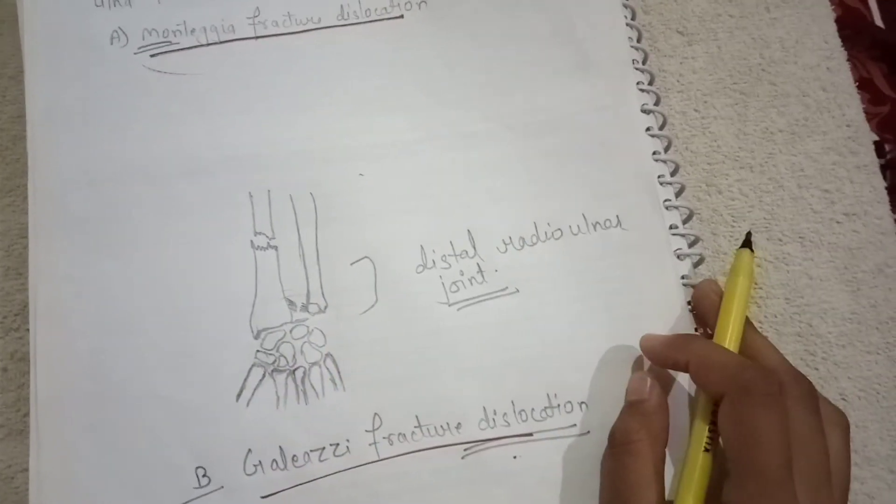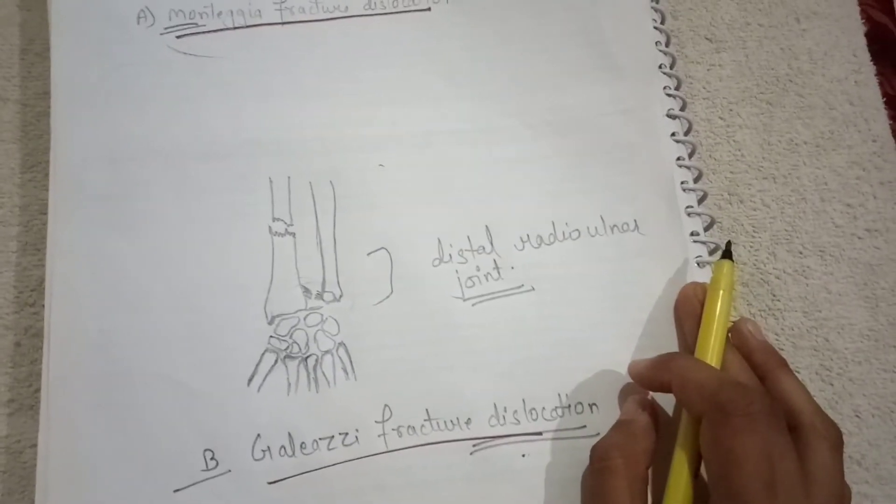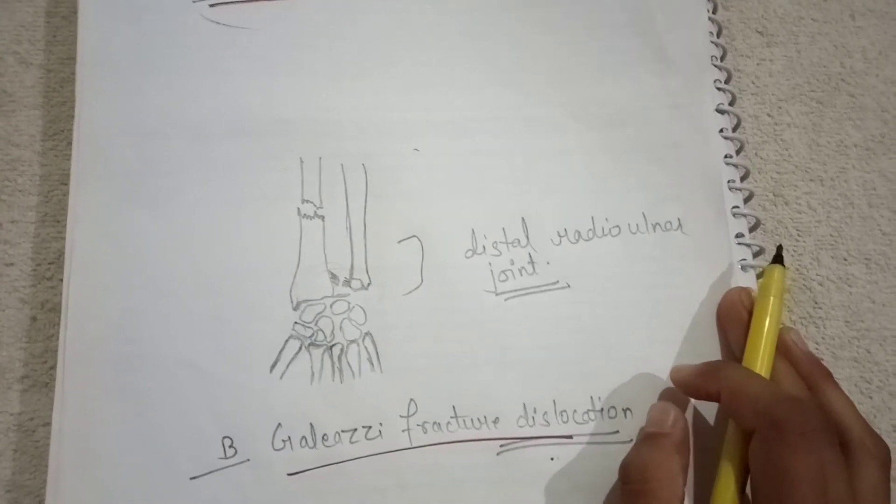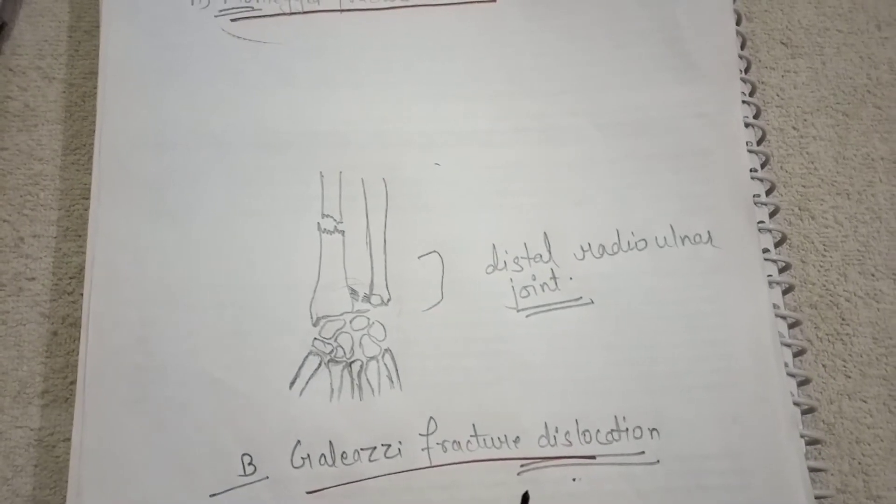Now what is the mechanism of injury behind this? If a person falls on an outstretched hand with elbow in flexion, this type of fall may increase the risk of having Galeazzi fracture dislocation.